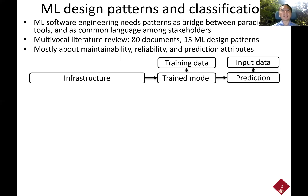For this new paradigm, we need patterns as a kind of bridge between the paradigm and concrete frameworks and tools, as well as a common language among different stakeholders, including software engineers, data scientists, and domain experts. We believe machine learning software engineering patterns can serve as both that bridge and common language. Recently, some machine learning engineering design patterns have been emerging; however, to the best of our knowledge, there is no comprehensive study on the state of the art of machine learning software engineering patterns.